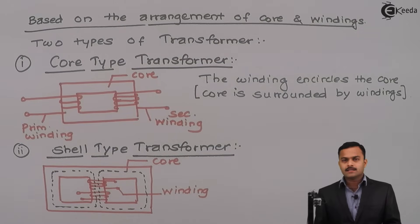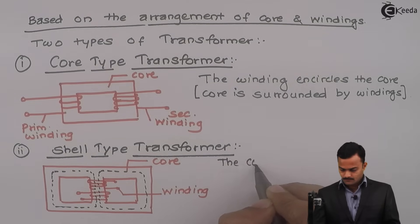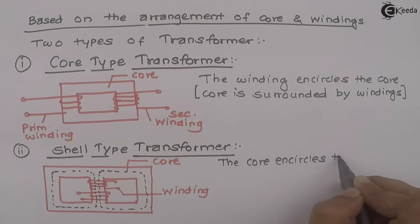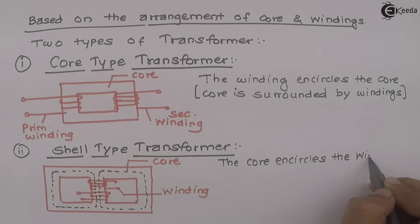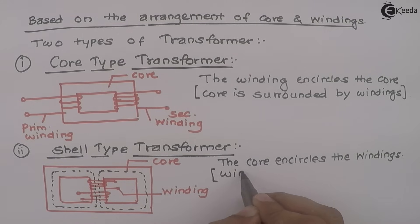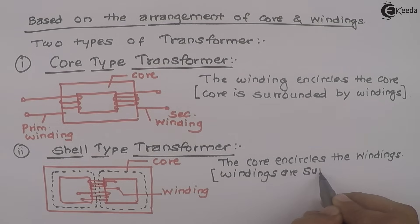So here, if you see what happened? There is a core outside and windings are inside. So I can say the core encircles the windings. Or in other words, you can say windings are surrounded by core.